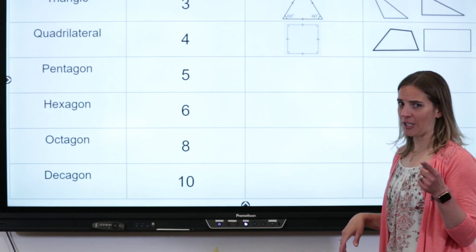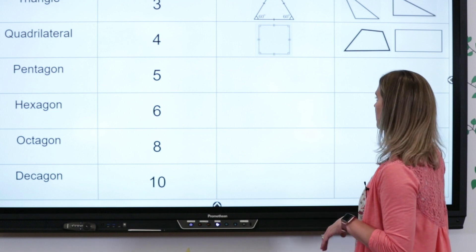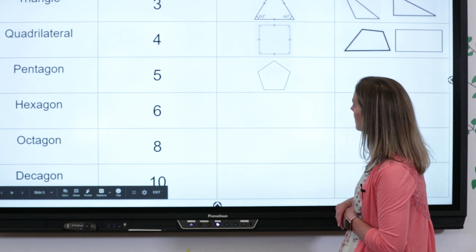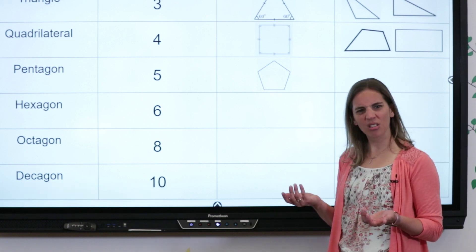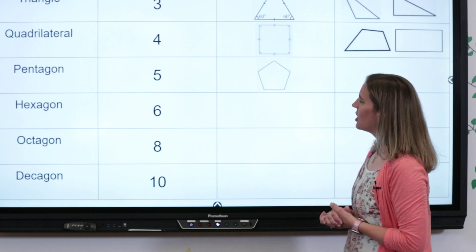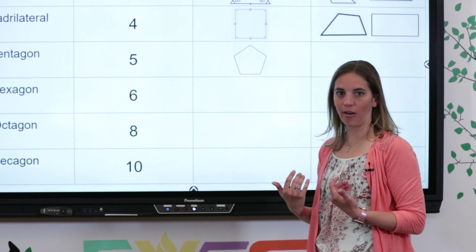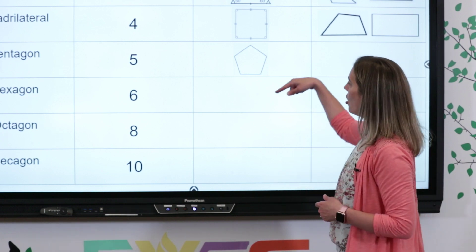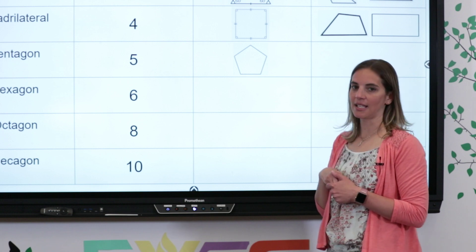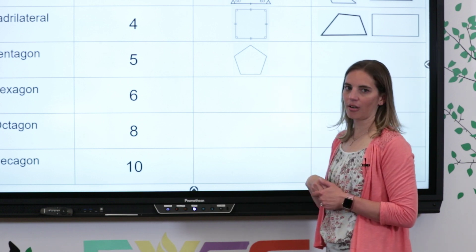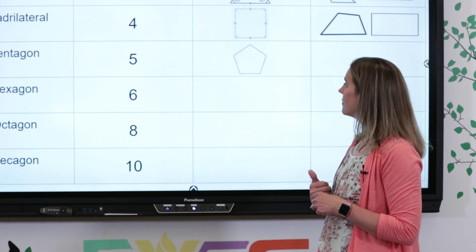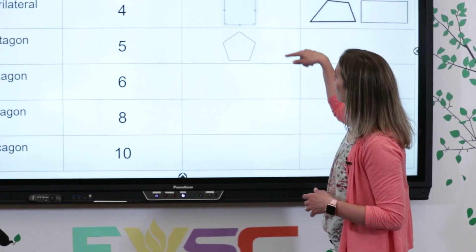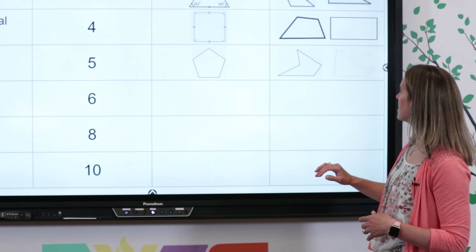How about a pentagon? Penta means five - pentagons have five sides. Look at our regular pentagon - it looks a little bit like a house, or like home plate when you're playing baseball. That's what reminds me of a pentagon. In order to be a regular pentagon, all the sides and all of the angles have to be the same. In a pentagon, are the angles acute, obtuse, or right? They're obtuse, and all five of them are the same size.